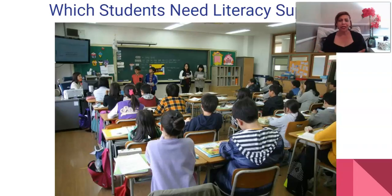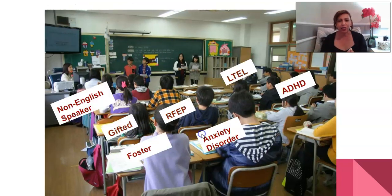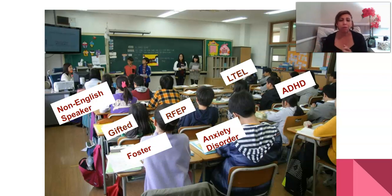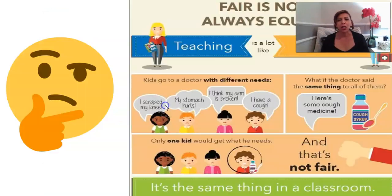It's important to start by reminding ourselves who's sitting in our classroom. That begins with looking at all the data and student profiles you have. Just by looking at your class you might not quite know. We think about our students and realize there are a lot of needs — whether students need language support, have social anxiety, or struggled from the regression in literacy and communication skills that happened after the pandemic and distance learning. Even gifted students can benefit from the strategies we'll discuss. We might have one or two students who are non-English speakers, so how do we make things accessible for them?